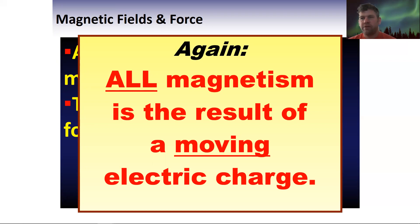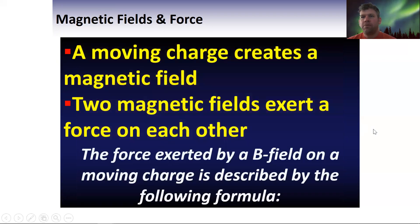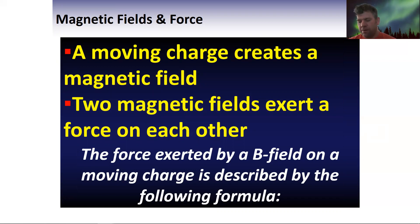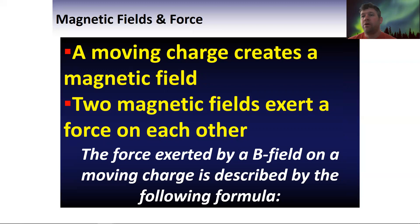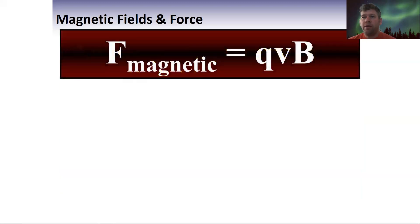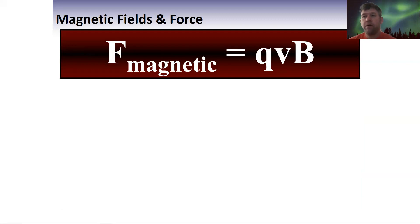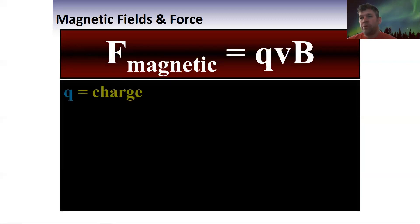I can't stress it enough: magnetism is the result of a moving electric charge — that's a big deal going forward. The force exerted by a B field on a moving charge is described by the formula for a single point charge or single charged object, which lets us find out how much force the B field is pushing on it.